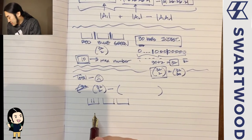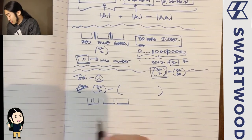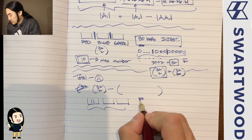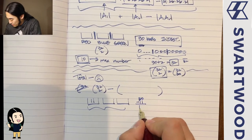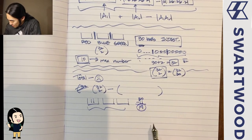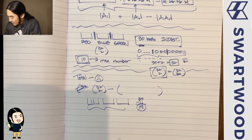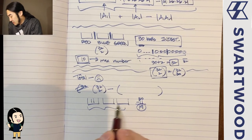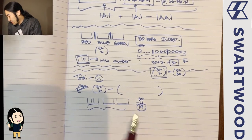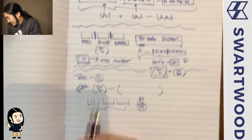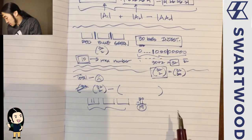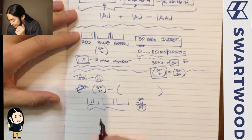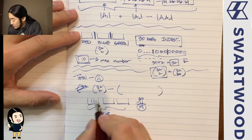If we deliberately place 11 in one urn, we're guaranteed to exceed the max. The remaining 19 balls can go anywhere. So we're back to the old game — placing 19 balls into 3 urns with 2 dividers — giving 19 + 2 choose 2 ways.